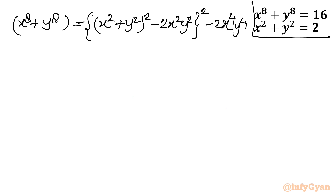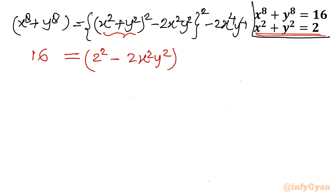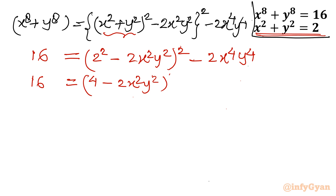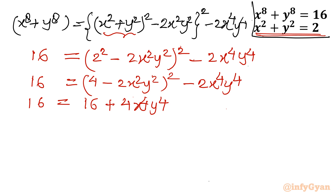Substituting the values, the equation becomes: 16 = (2² − 2x²y²)² − 2x⁴y⁴. Expanding using (a − b)² gives 16 = 4x⁴y⁴ − 16x²y² + 16 − 2x⁴y⁴, which simplifies to 16 = 2x⁴y⁴ − 16x²y² + 16.